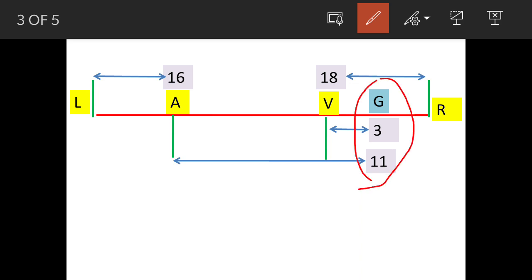So this is G. Now what is the position of G from the right side? It will be 18 minus 3, equals 15. So he is 15th from the right side, and the people who are to the right of G are going to be 14.